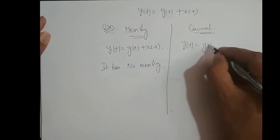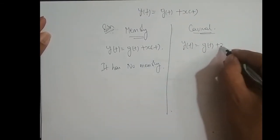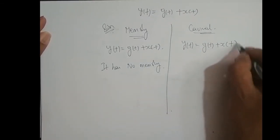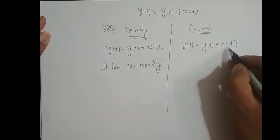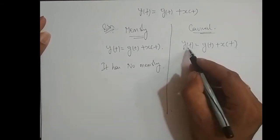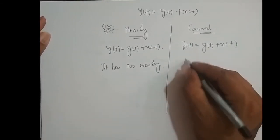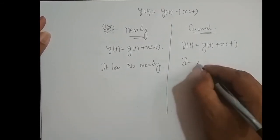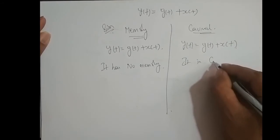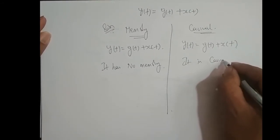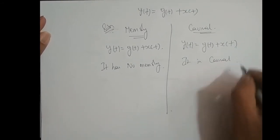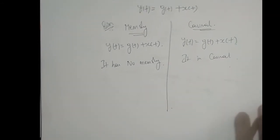For causality of y(t) = g(t) + x(t): the present output depends upon present input value. Therefore, the system is causal.